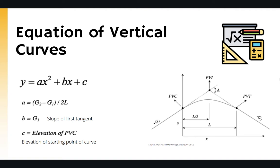Parameter a is defined as the difference between the two slopes, g2 minus g1, divided by two times the length of the vertical curve. Parameter b is equal to g1, the initial slope of the initial tangent. Parameter c is the elevation of the starting point of the vertical curve, or the elevation of PVC. Once we know a, b, and c, we can write the full equation of the curve and estimate the elevation of each point on the vertical curve.